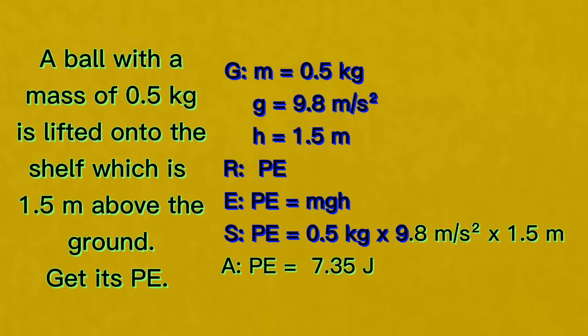Given are mass, which is 0.5 kilograms, gravity, which is 9.8 meters per second squared, and height, which is 1.5 meters. The required is potential energy or gravitational potential energy. The equation to be used is, potential energy equals mass times gravity times height.